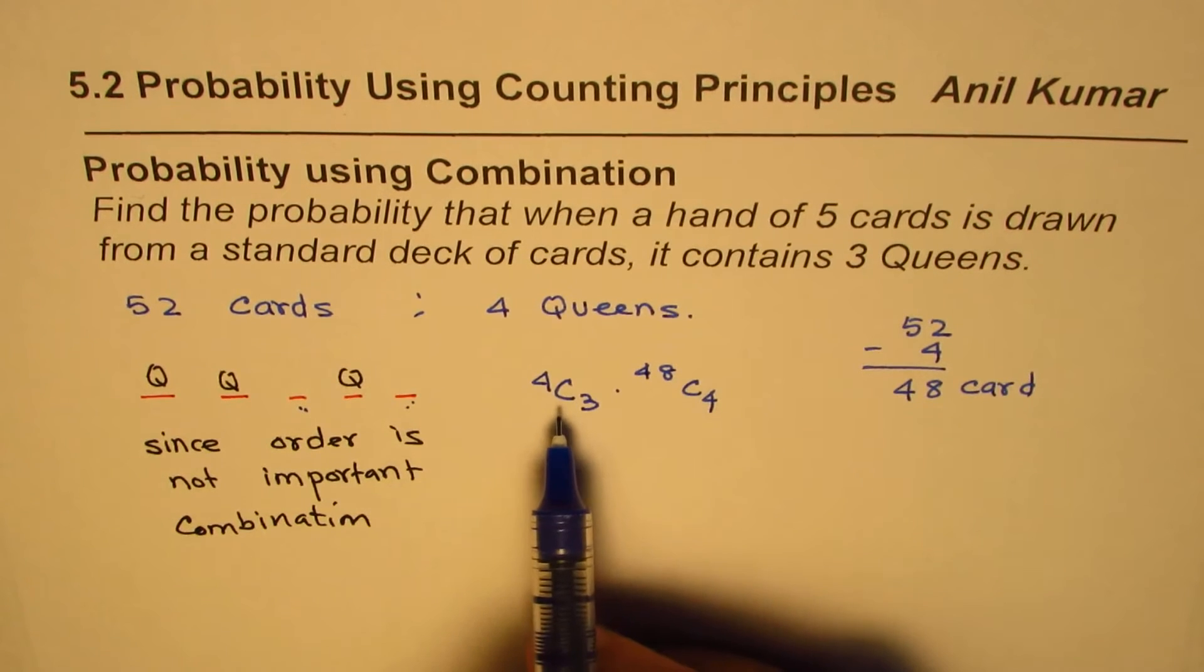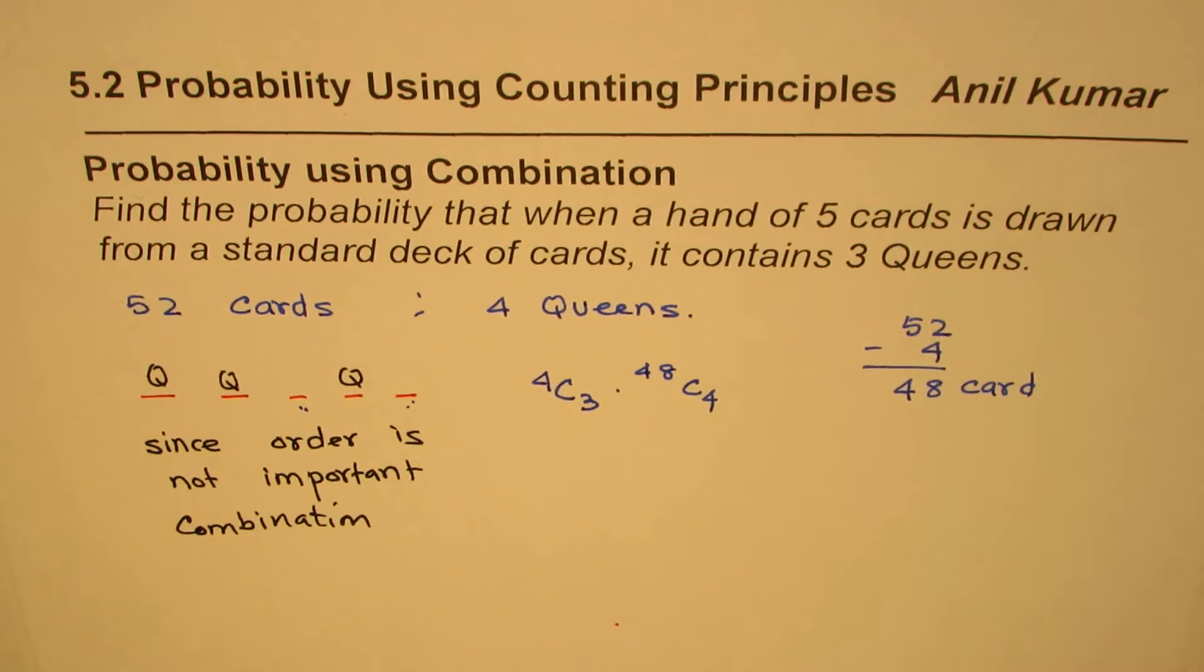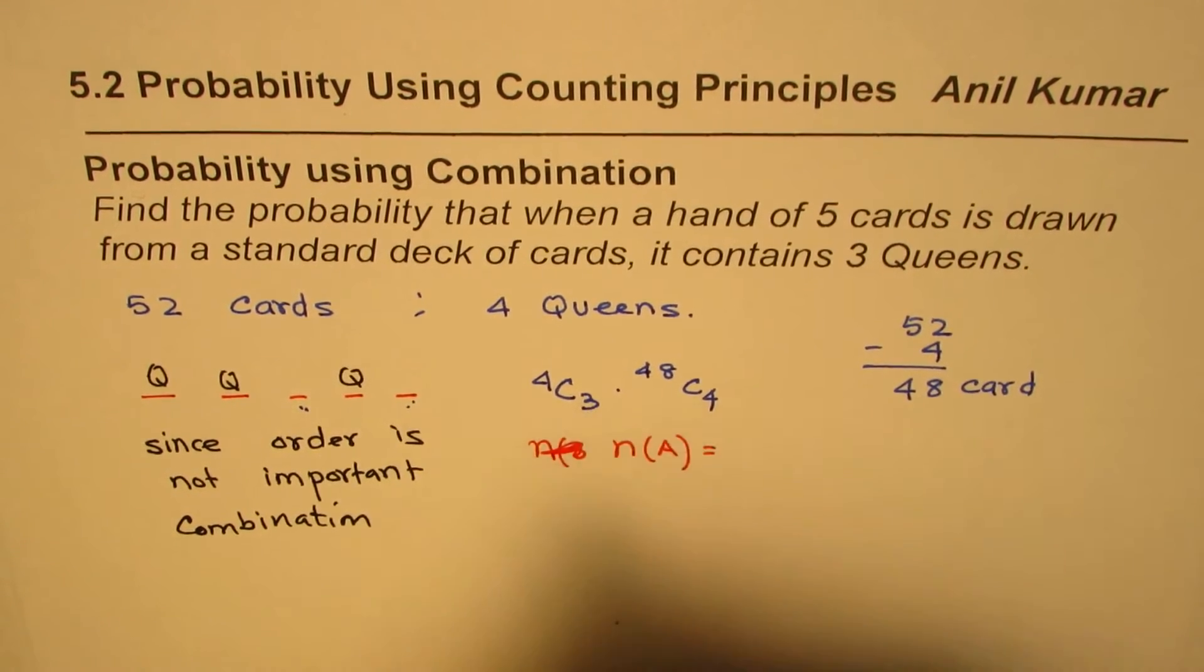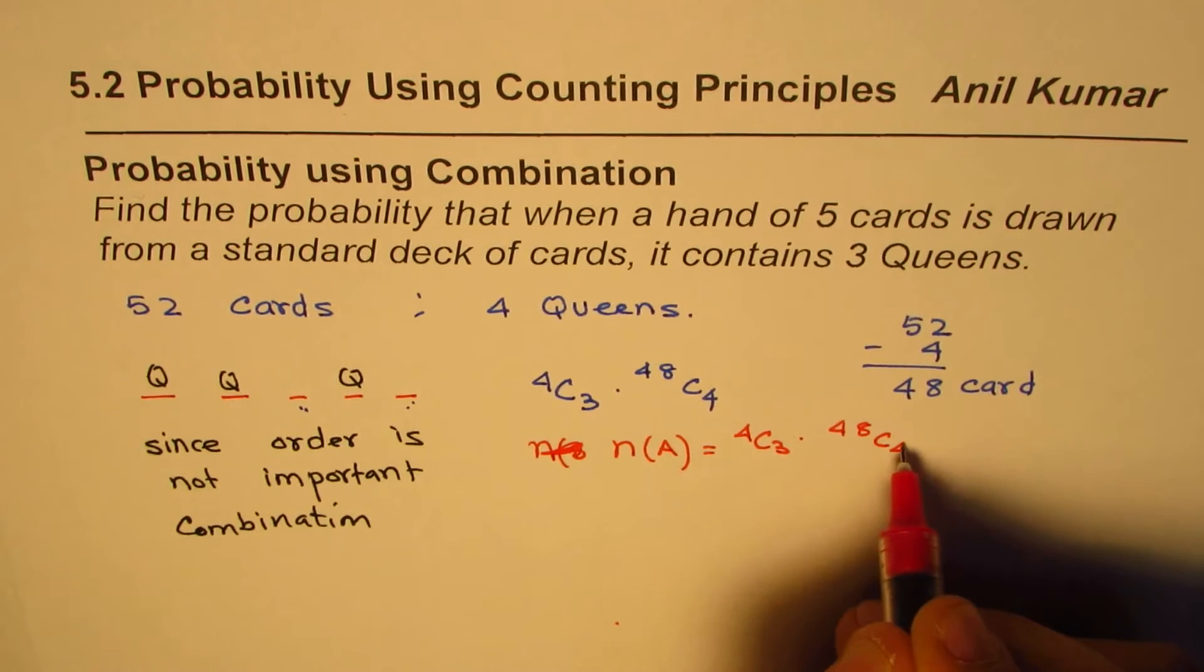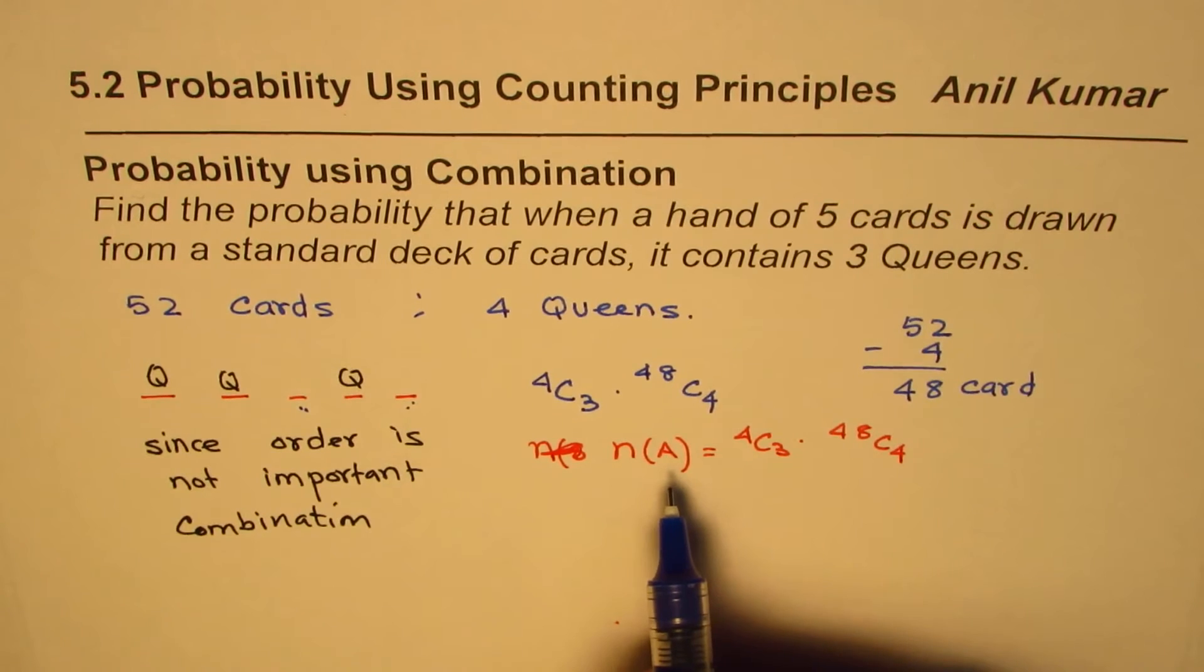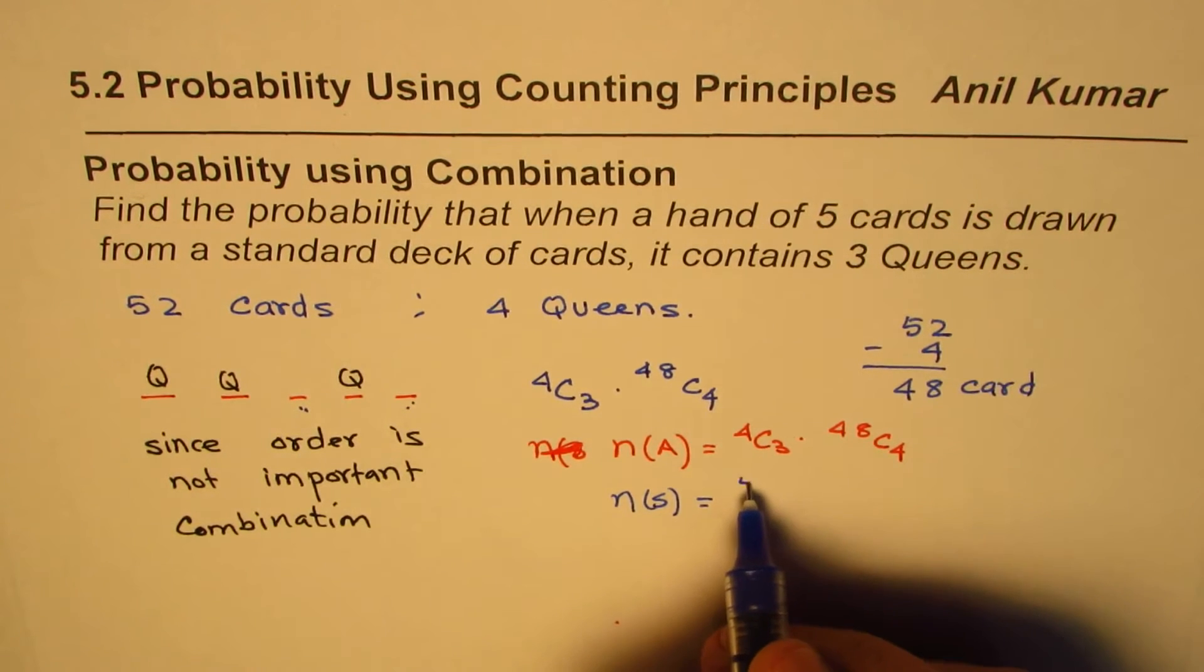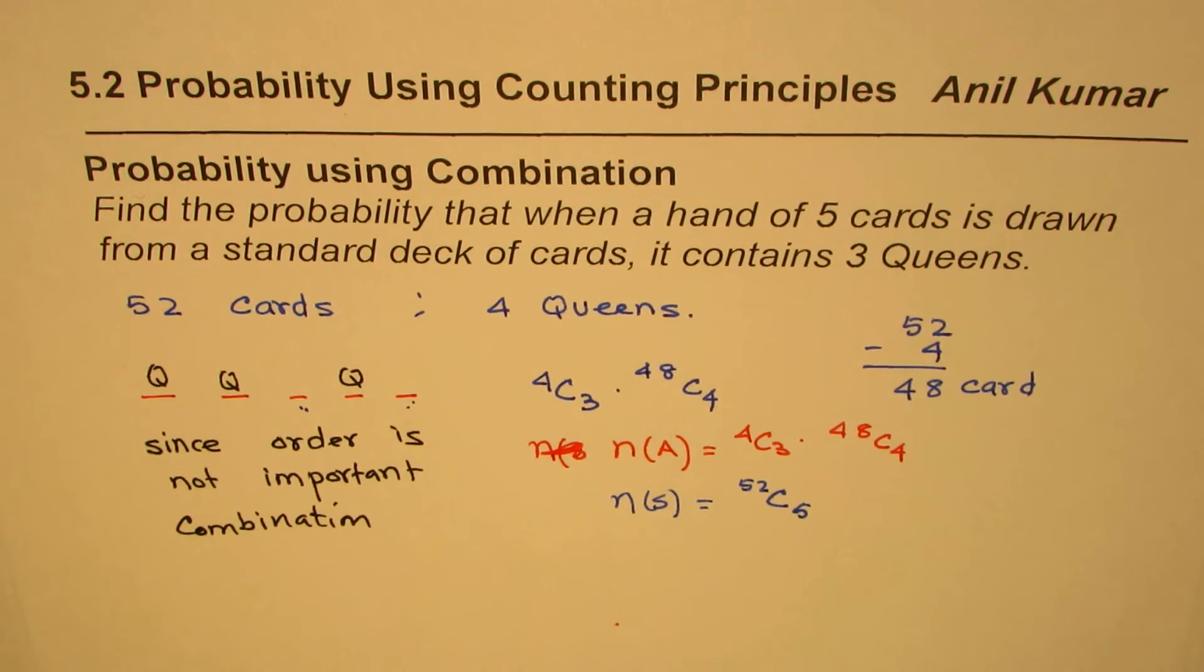In this case, the favorable combinations are 4C3 times 48C4. Now what are the total number of combinations? Since we are selecting 5 out of 52, all possible outcomes are from a set of 52 combinations of 5 - that is 52C5.